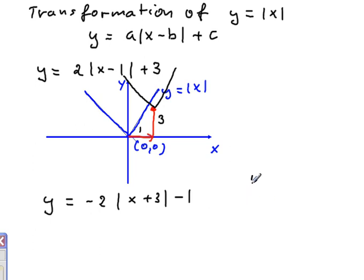So think of the following. Negative 2 in front will flip the graph in x-axis, plus 3 causes the graph to shift 3 units to the left and 1 unit down.